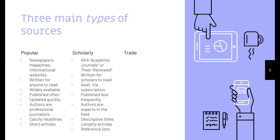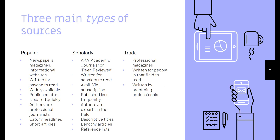The third type of source I'm only going to talk about briefly, because some of your professors require that you use them. They're called trade journals, also known as professional magazines. They're written for people in that field to read, and they're written by practicing professionals. For example, there's a magazine called American Libraries — if you weren't a librarian, you would probably never subscribe to it. There's also one called Aviator Weekly that's meant for pilots to read, and it's written by pilots.